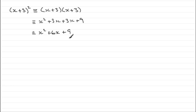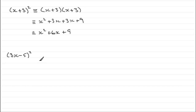Let's try it with another one. This time we'll have a number in front of the x — say 3x minus 5, all squared. What do you think this will be?